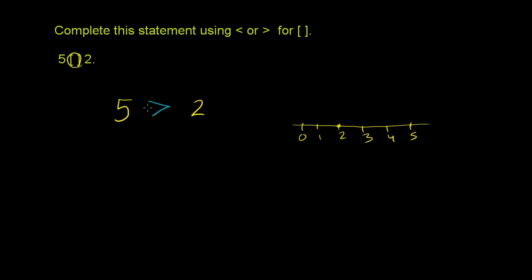So we want it like this. The way I think about it is that this right here is the big side of the symbol, and this point is the small side of the symbol. So 5 is greater than 2.